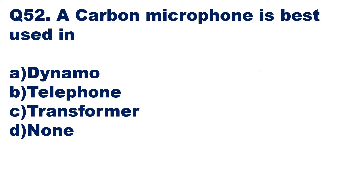Question 52: a carbon microphone is best used in which application? Options are dynamo, telephone, transformer, or none. Carbon microphones were used in older cup-type landline phones — the dialing phones we had earlier. In the cup where you speak, there is a microphone with carbon granules that converts sound energy into electrical energy. The most important application of a carbon microphone is the telephone system — option B is the right answer.